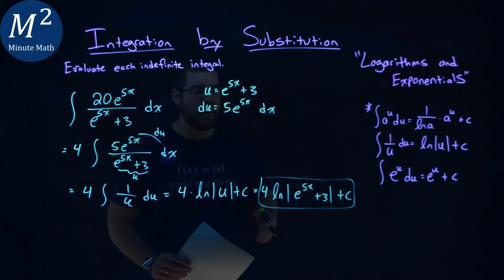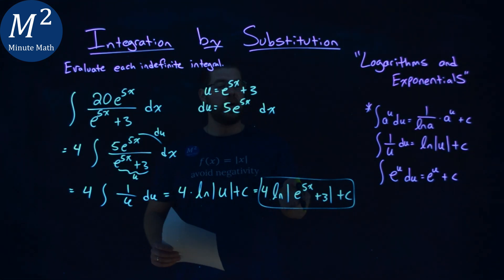And that's it. Our final answer again is 4 natural log of absolute value of e to the 5x plus 3 plus c.